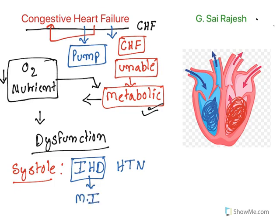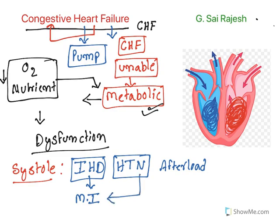That results in systolic dysfunction. Hypertension, as explained previously, increases afterload. Increased afterload increases ventricular wall tension and finally results in muscle death. This also results in myocardial infarction and finally systolic heart failure. So chronic hypertension will finally result in systolic heart failure.